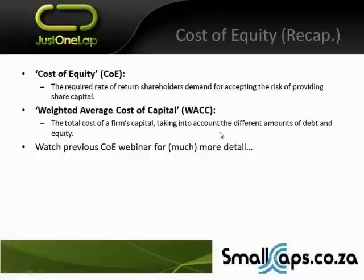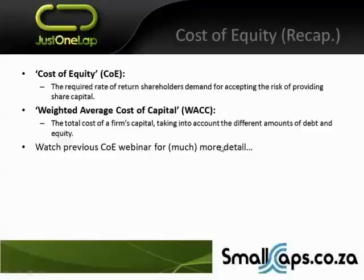Just recapping on the cost of equity: it's the required return shareholders demand for accepting the risk of providing share capital — big way of saying if I'm taking a risk, I have to be paid for it. The greater the risk, the higher the cost of equity and the greater the discount rate. WACC — the weighted average cost of capital — is the total cost of a firm's capital, because firms don't just use equity; some use debt, debentures, long-term loans. Depending on how geared you are, you might use the cost of equity or the WACC.